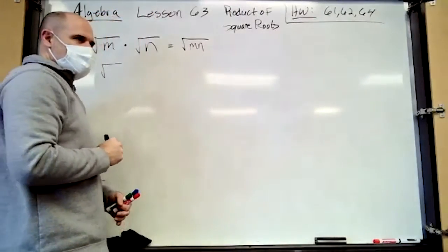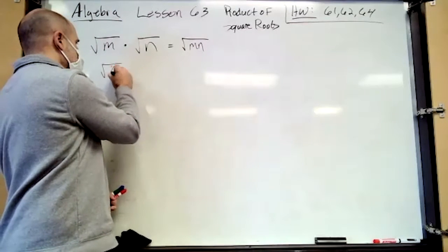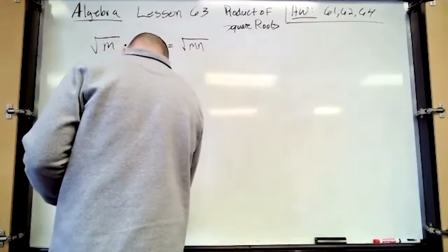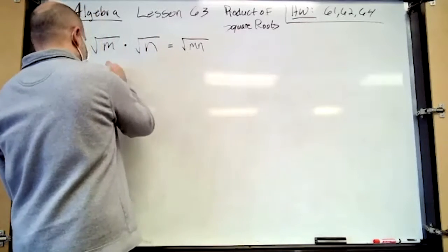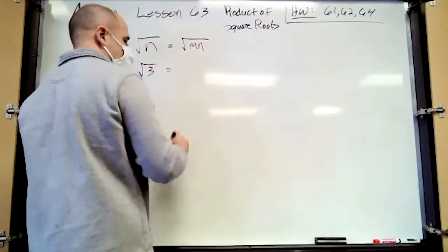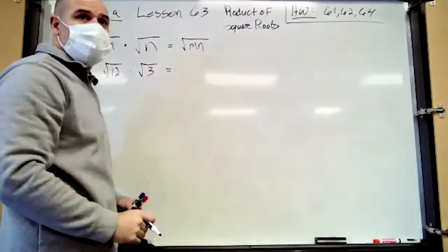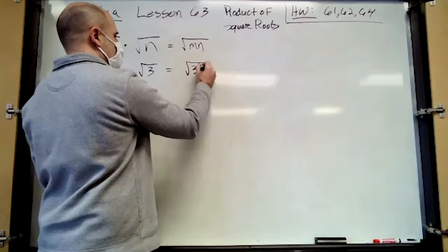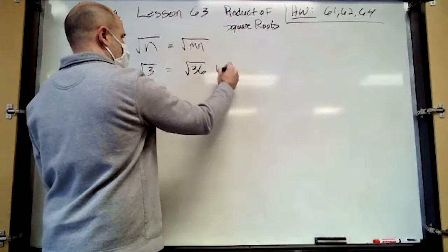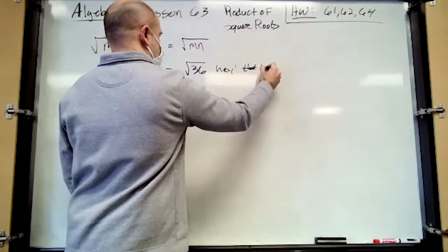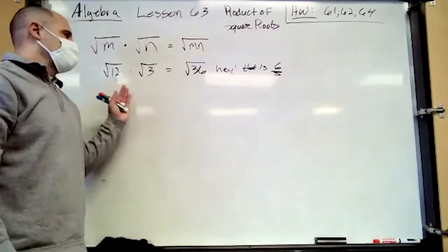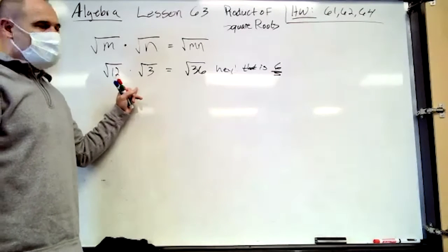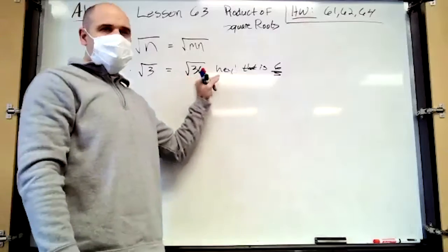Here's something else that's kind of exciting. Let's do the square root of 12 times the square root of three — equals what? Square root of 36, which is six. So we can't take the square root of 12 individually, and we can't take the square root of three, but when you multiply those two together, you get something you can take the square root of.